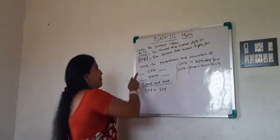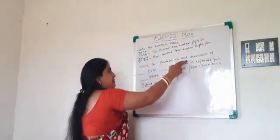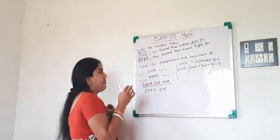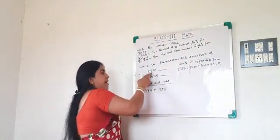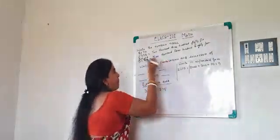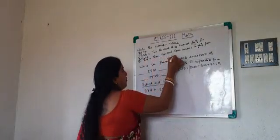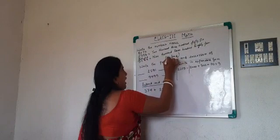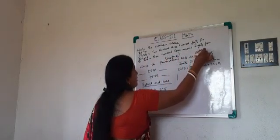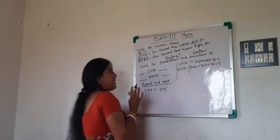Next is write the predecessor and the successor of the given number. I have given you a number 2591. Predecessor means the number comes before. And successor means the number that comes after. Don't get confused.